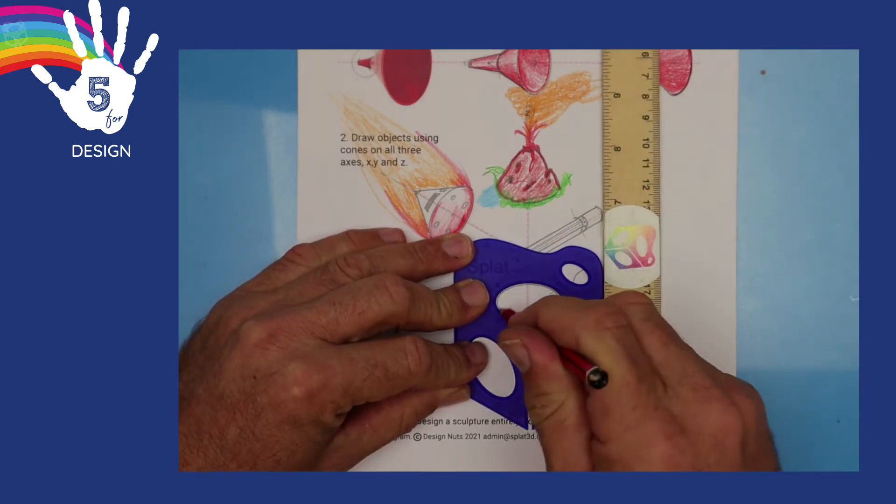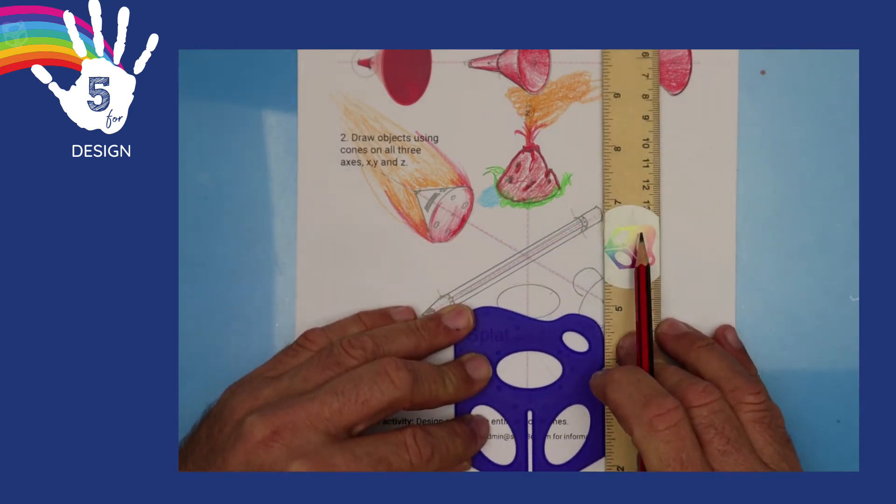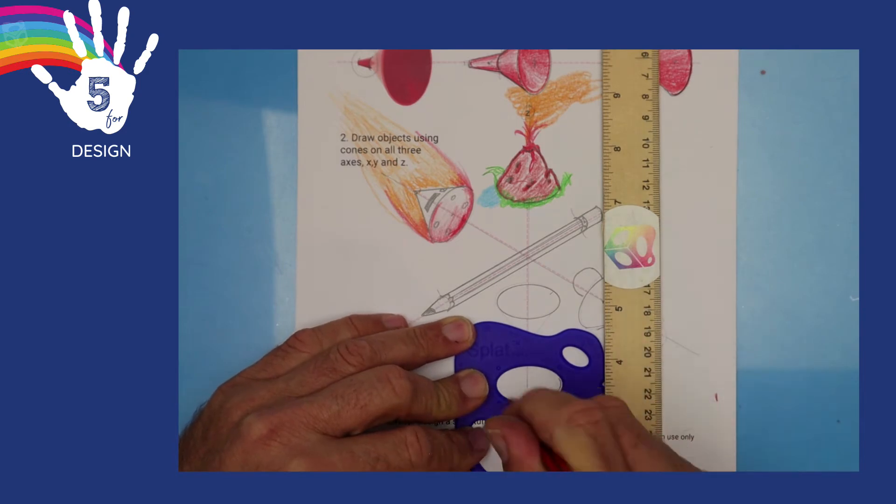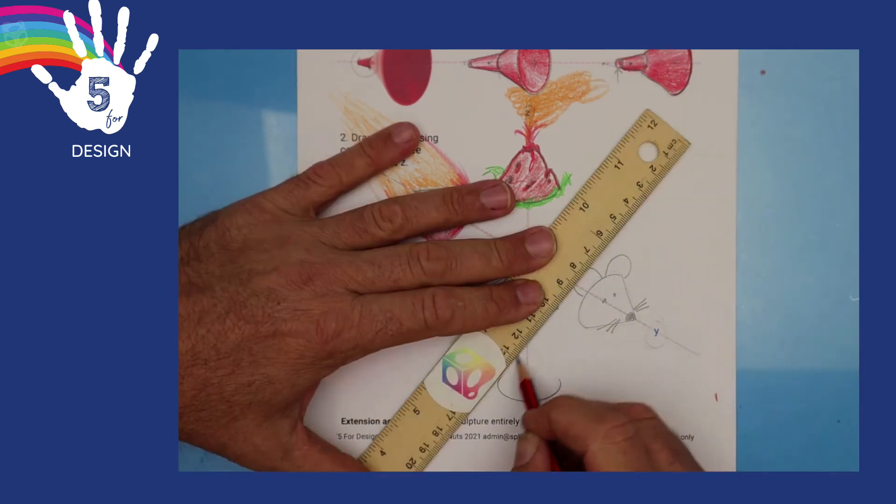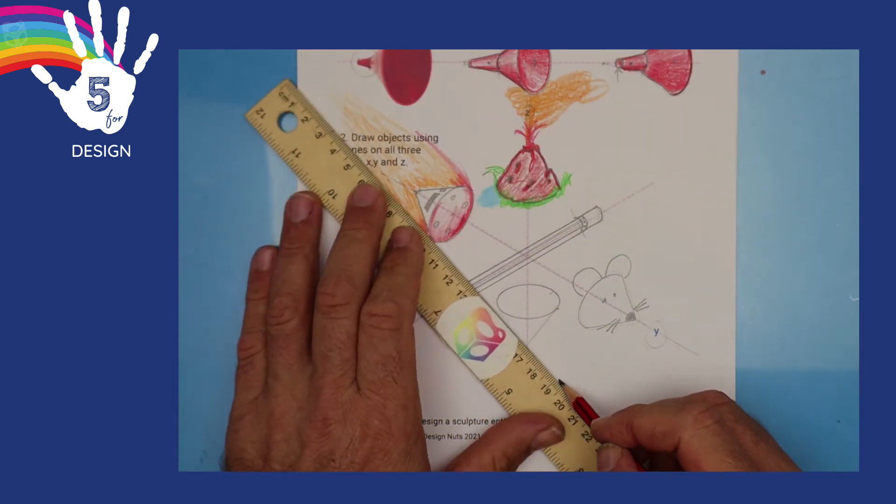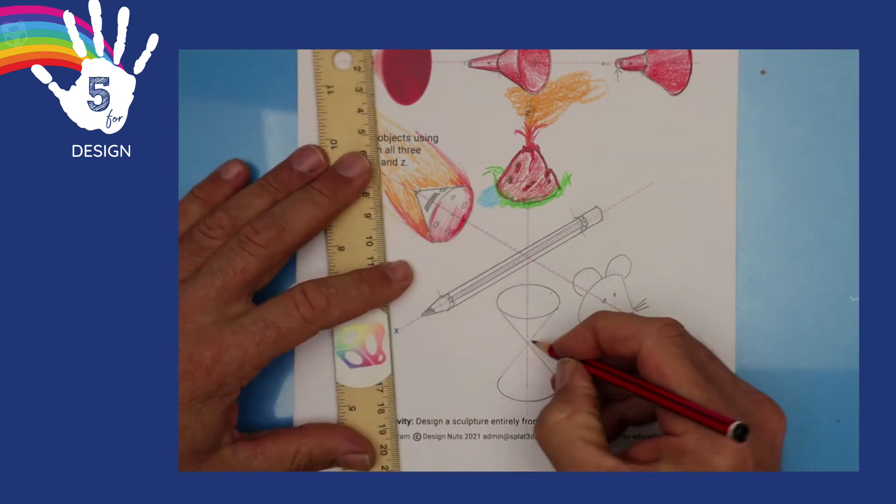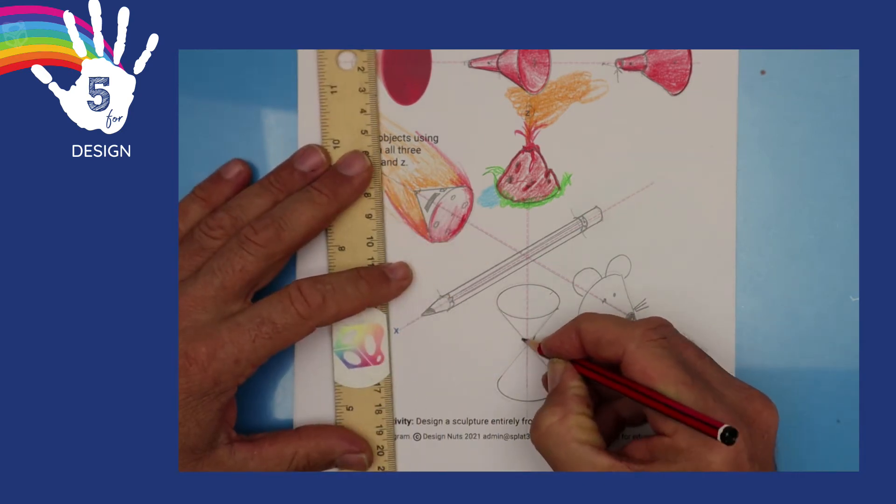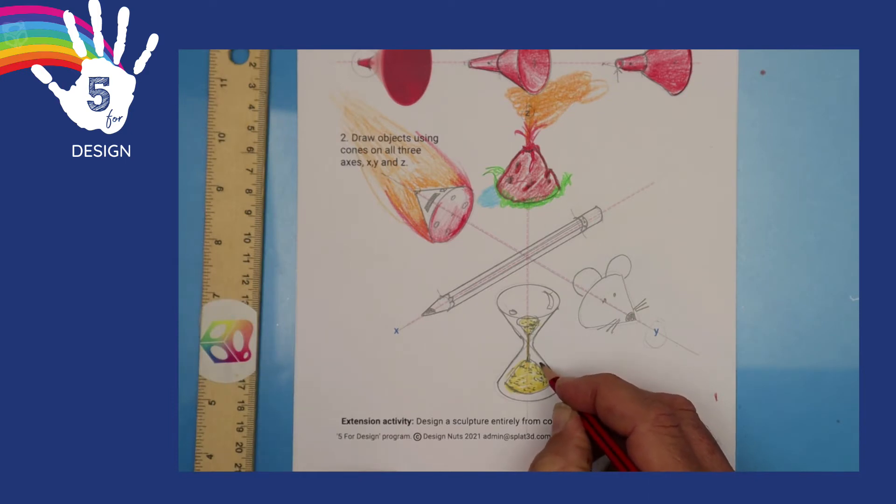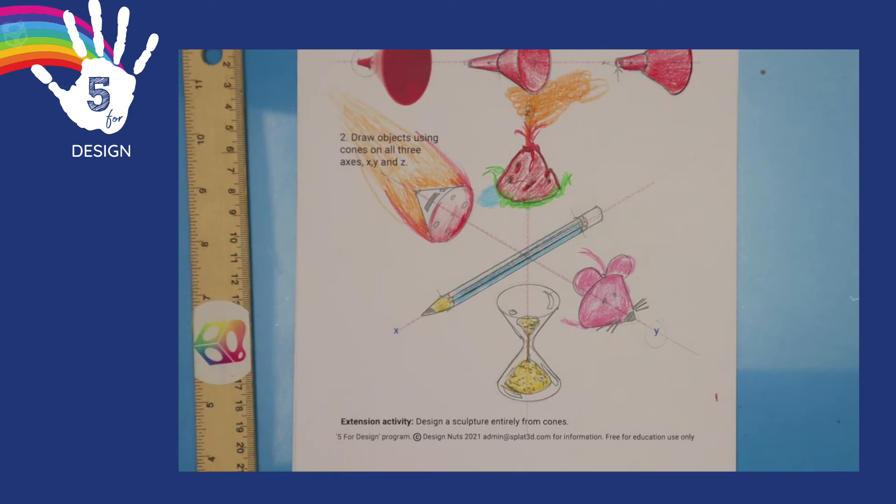And on the same axis. A cone pointing down and another one pointing up. We could join together with some lines to become a timer or an hourglass. All we need is some sand falling. Some reflections.